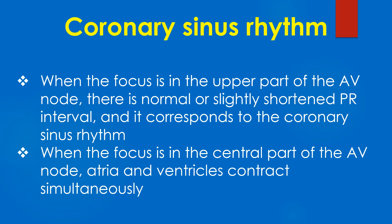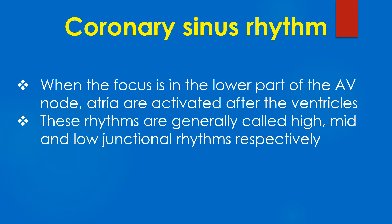When the focus is in the central part of the AV node, the atria and ventricles contract simultaneously. When the focus is in the lower part of the AV node, the atria are activated after the ventricles. These rhythms are generally called high, mid, and low junctional rhythms respectively.